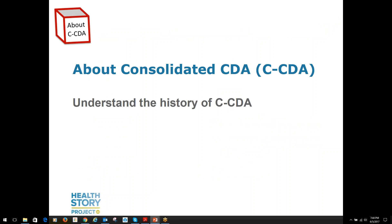Consolidated CDA is an HL7 implementation guide that explains how to use the base CDA standard to produce 12 different types of clinical documents. The CDA standard is very broad to support all different types of clinical documents, so tighter constraints needed to be defined so that implementers would know how to use CDA to make a specific type of document for interchange, like a discharge summary or procedure note. The document template definitions in Consolidated CDA are made up of other templates that constrain sections, entries, and other smaller parts of the CDA-based standard — a nesting design that supports the core principle of context.